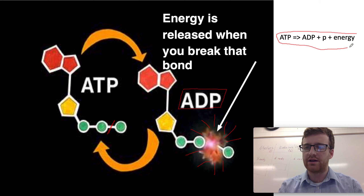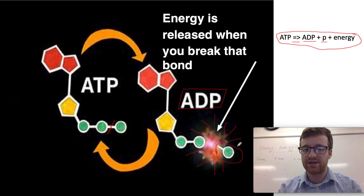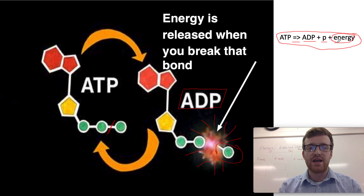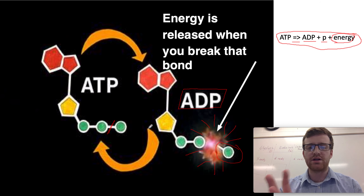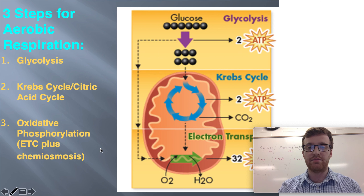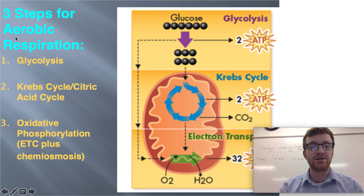So that's where a lot of the energy is stored, and when that bond is broken it releases that energy. The formula is: ATP gives you ADP plus a lone phosphate, and it releases energy. ADP is not thrown away or discarded by your body — it's actually reused. And that's what I'm going to talk about now: cellular respiration, which is the process of recycling that ATP. There are three steps for aerobic respiration — I'm not going to go into fermentation today, just aerobic respiration, which requires oxygen.